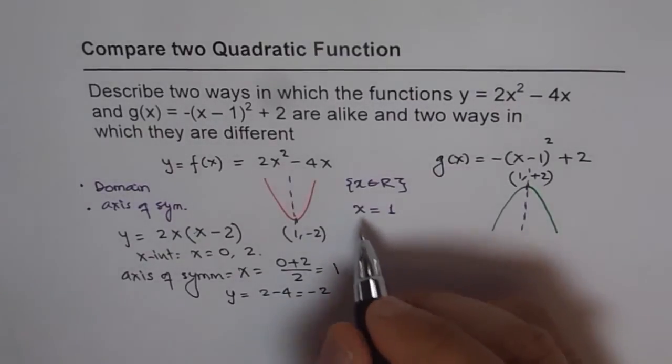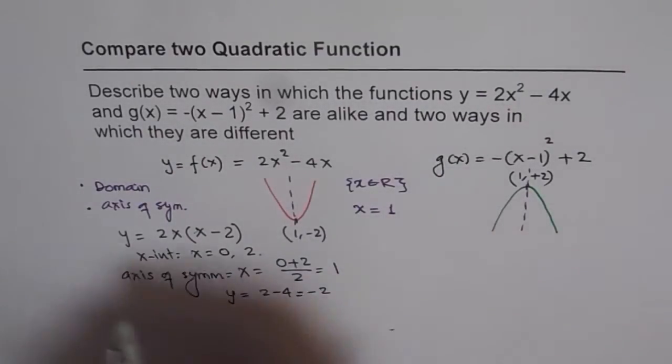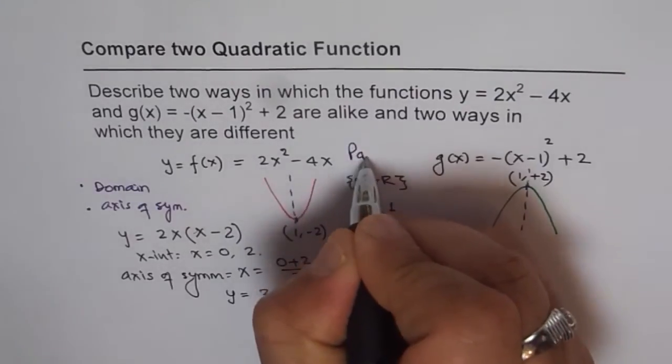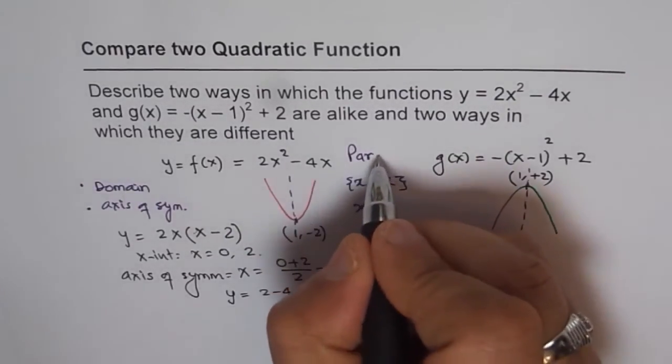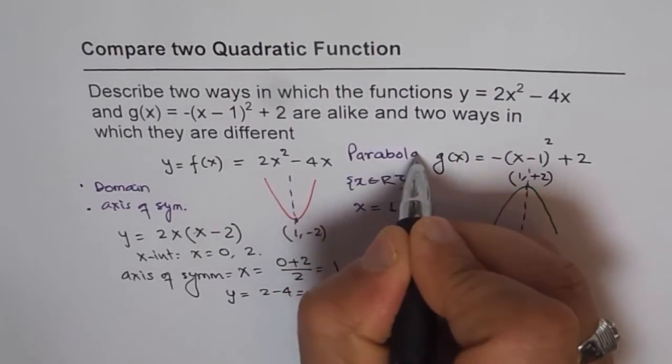We can always say shape is a parabola. We can always add that to it. That means both are parabolas. When you sketch them, they look like a parabola. So that is also a similarity.